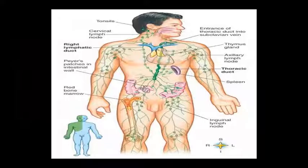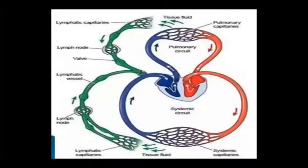Look at the entire lymphatic vessel diagram: tonsils, cervical lymph nodes, right lymphatic duct, Peyer's patches in the wall of the intestine, red bone marrow, inguinal lymph nodes — here connected with the spleen — thoracic duct, axillary lymph nodes, thymus gland, and the entrance of the thoracic duct into the subclavian vein, going into the subclavian vein.